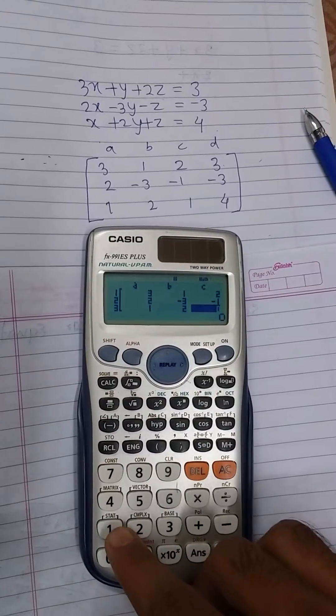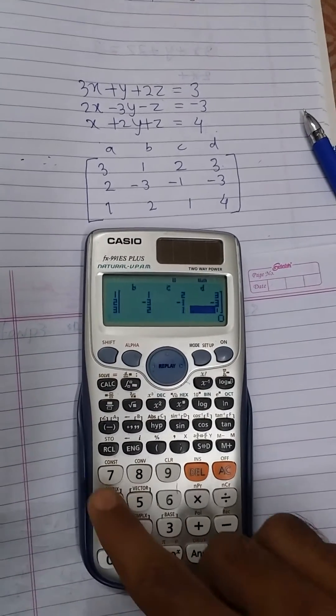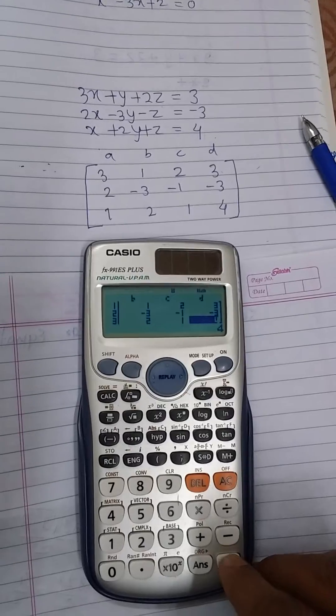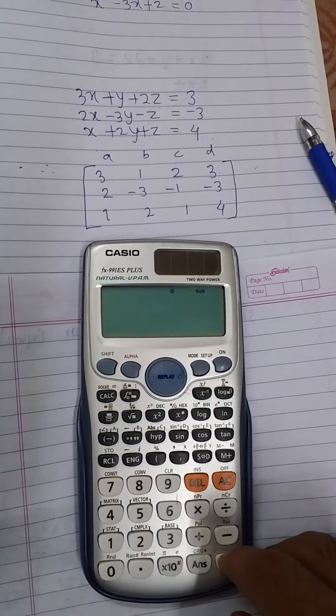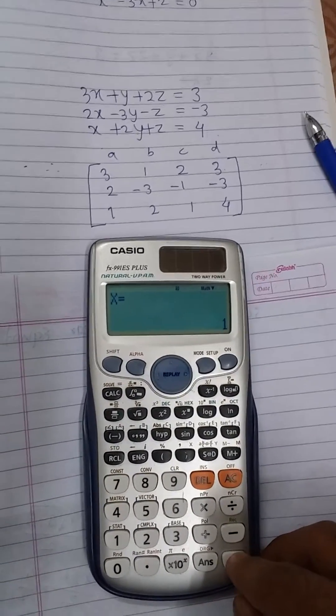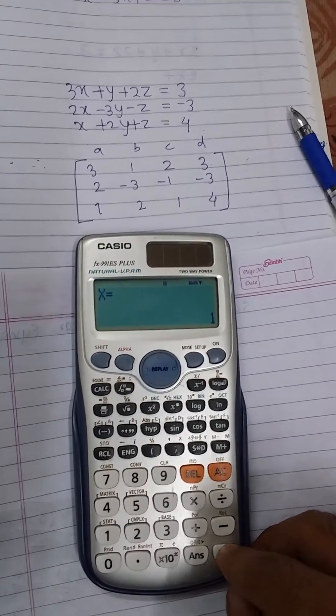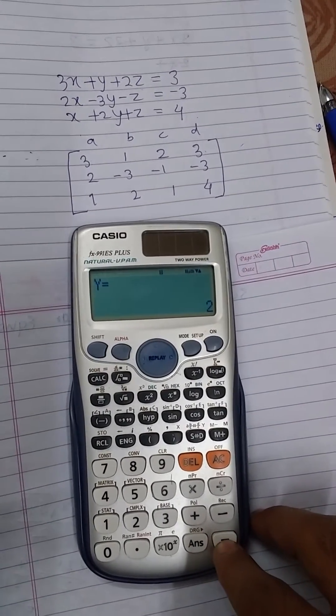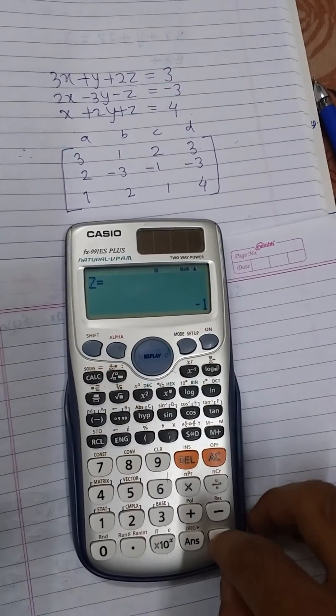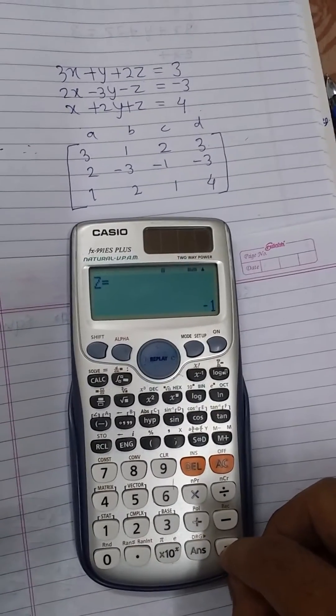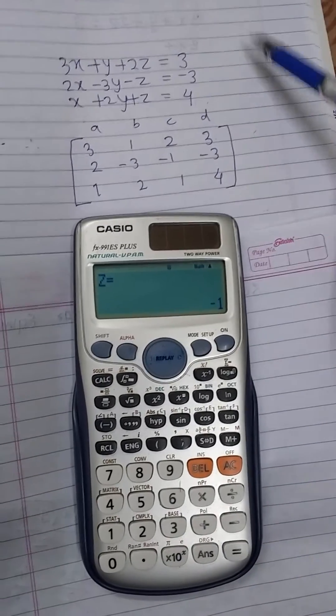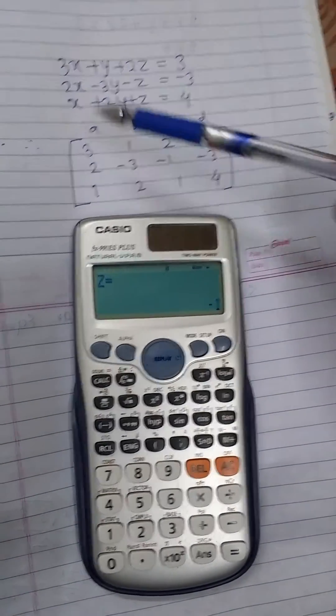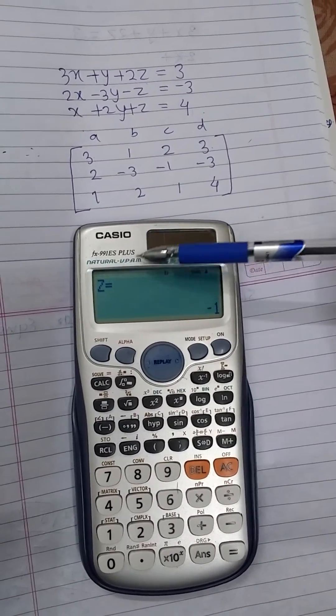Then we will get the values. x is equal to 1. Again press equal button, y is equal to 2. Again press equal button, z is equal to minus 1. In this way, we can solve the system of linear equations by using the FX-991ES Plus calculator.